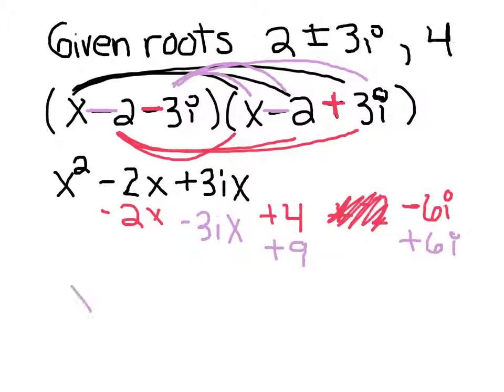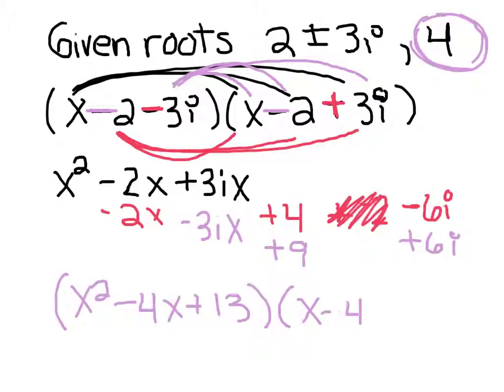So that becomes x² - 4x + 13. And I have to multiply that by this root over here by x - 4. So you're going to keep going with that to get the final solution.